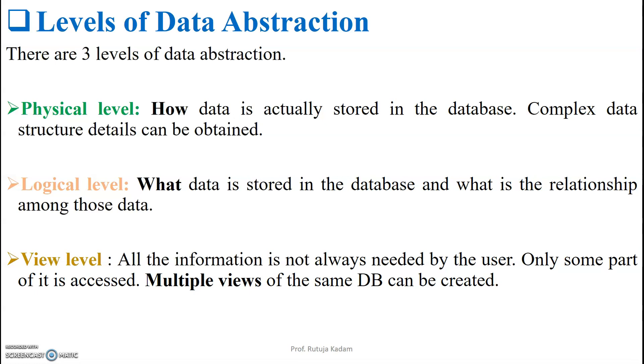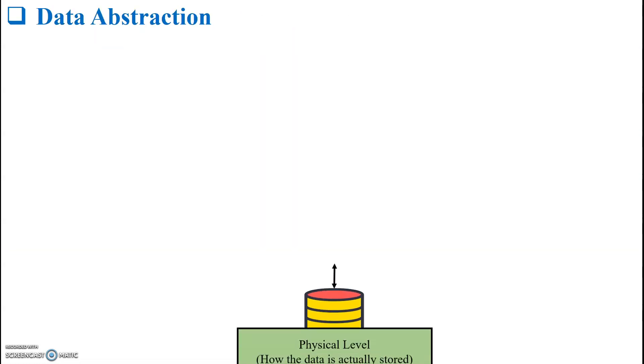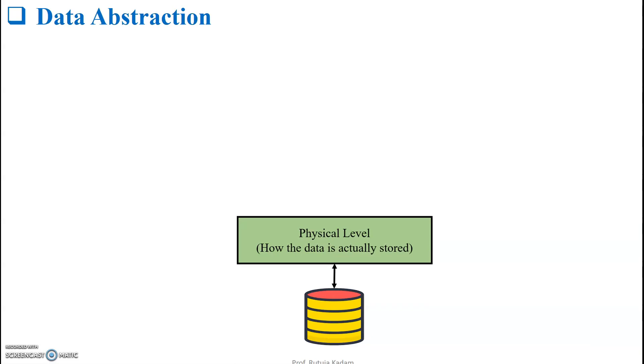I will be explaining this with the help of a diagram. This is a database with a physical level, logical level, and view level. Let us see the physical level first. The physical level says how the data is actually stored. The data can be stored in the format of bits, bytes, words, nibbles, anything. The location can be calculated using offset address, logical address, physical address, displacement, and the data can be either stored in a centralized manner or distributed. So how the data is actually stored comes under physical level.